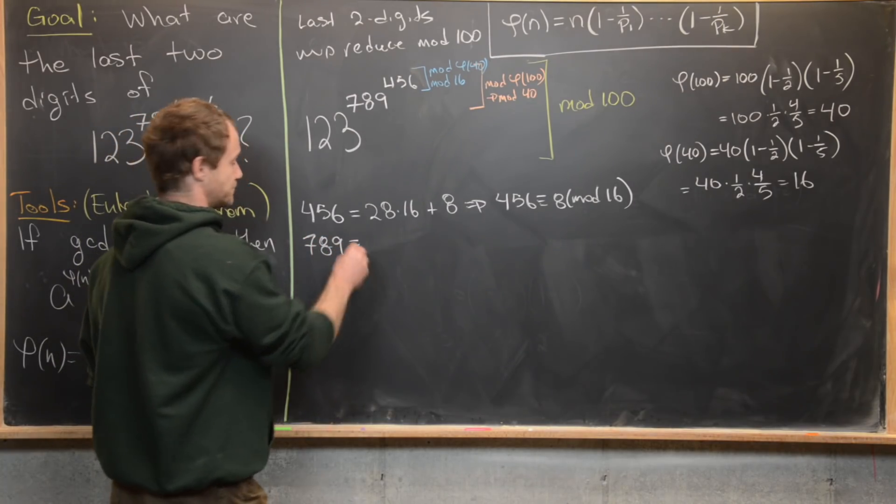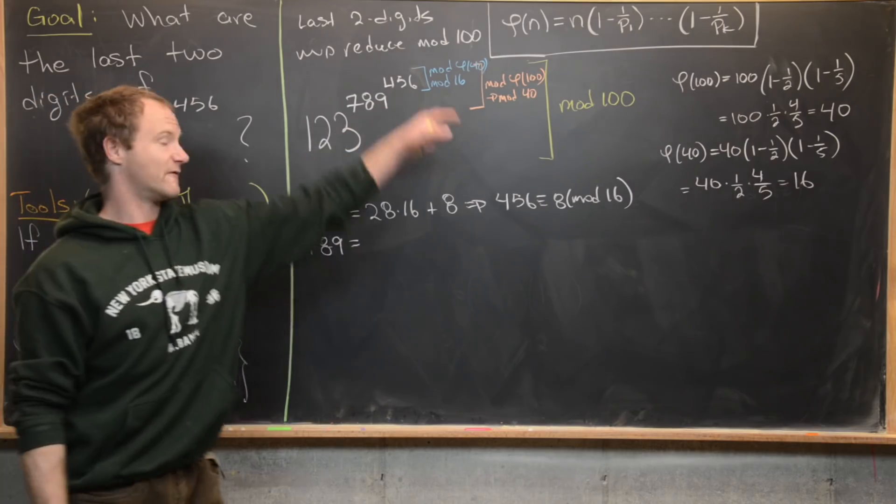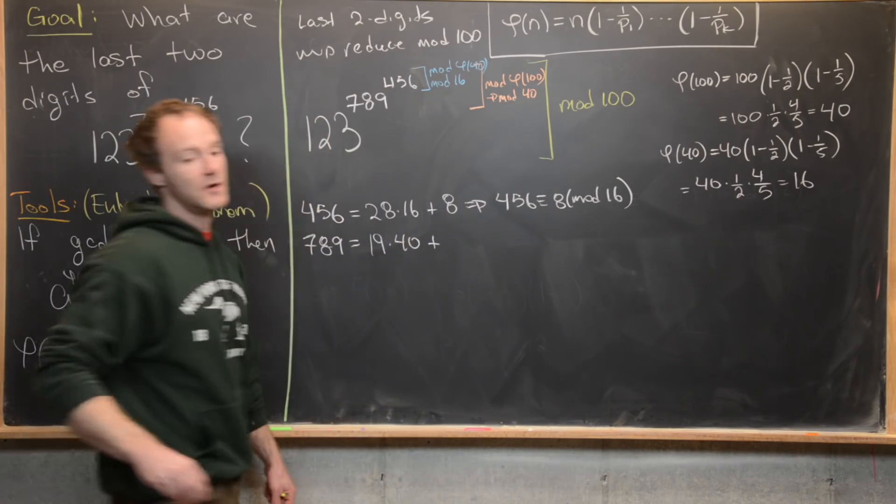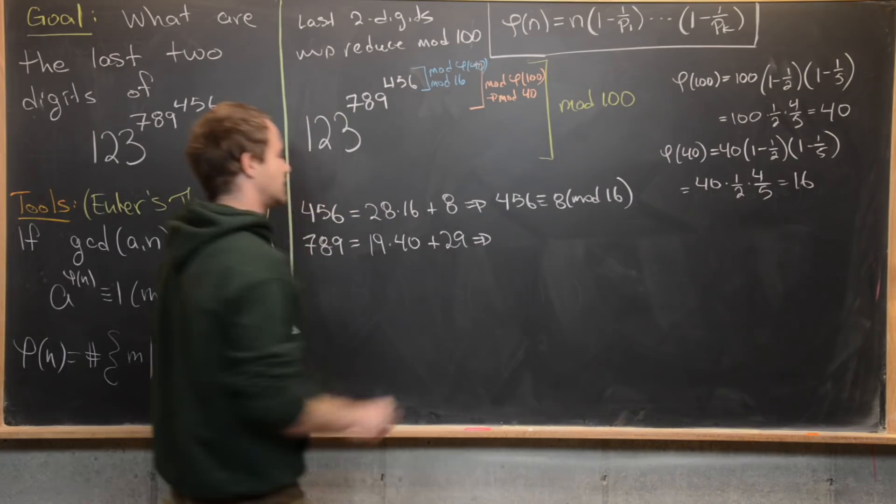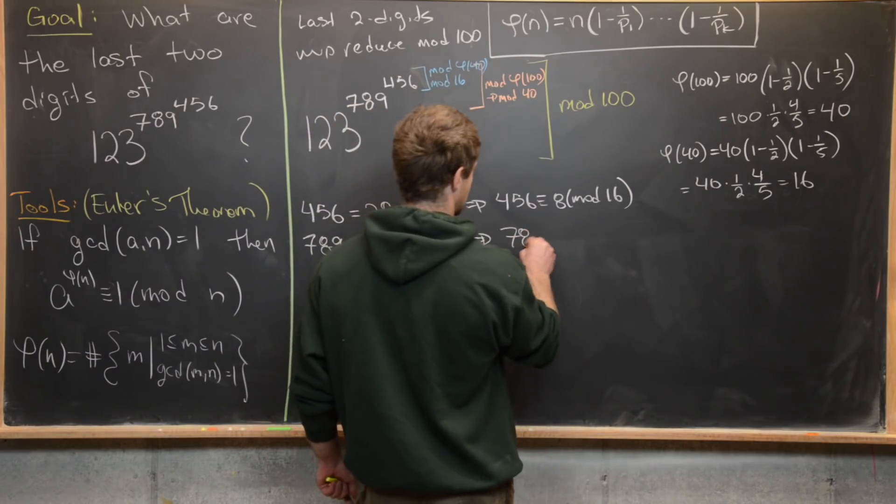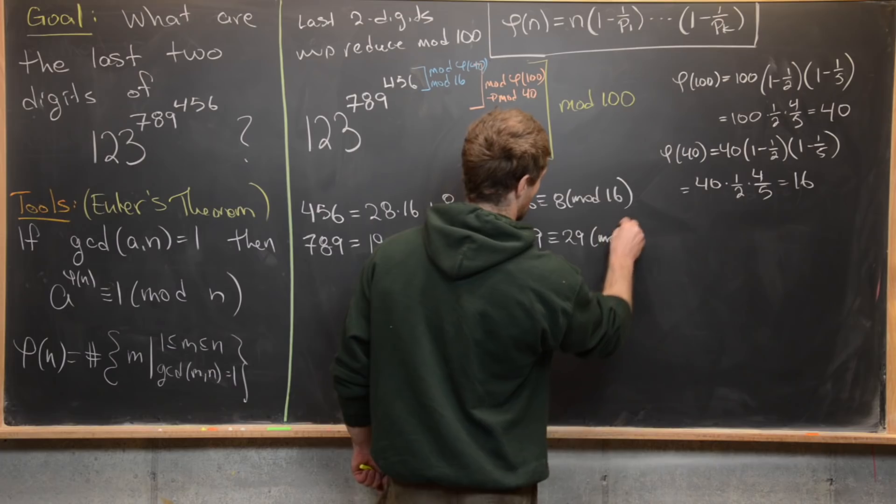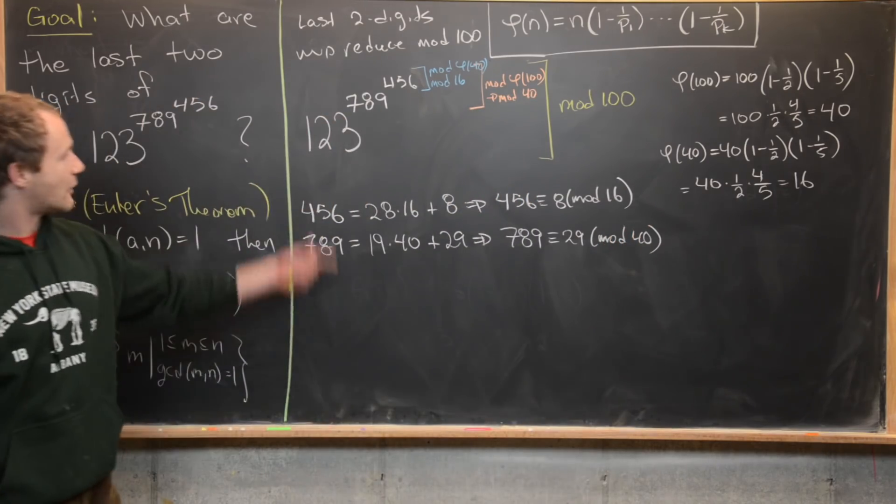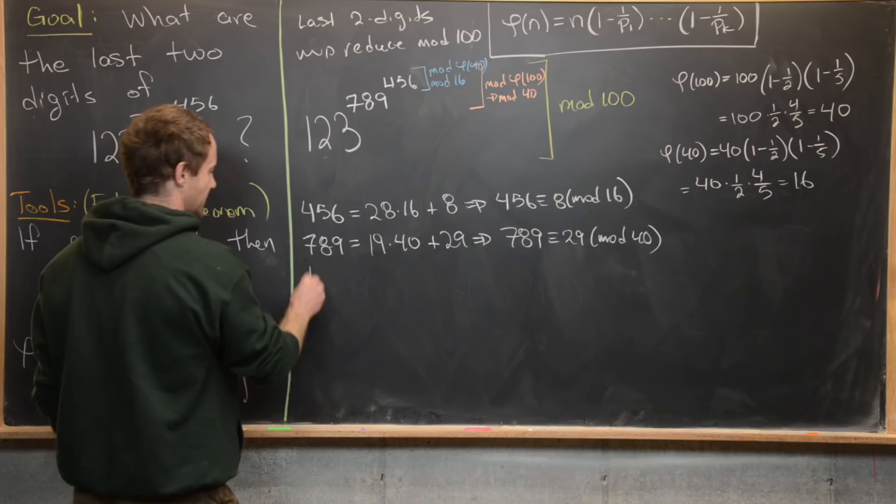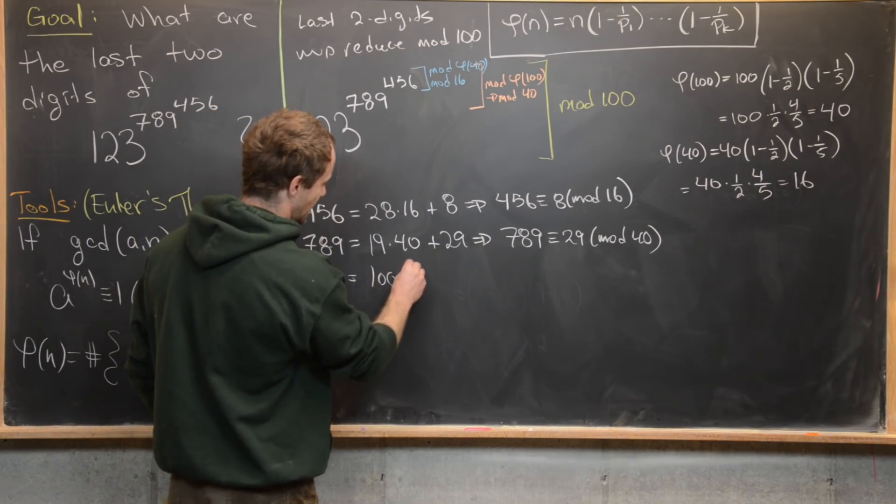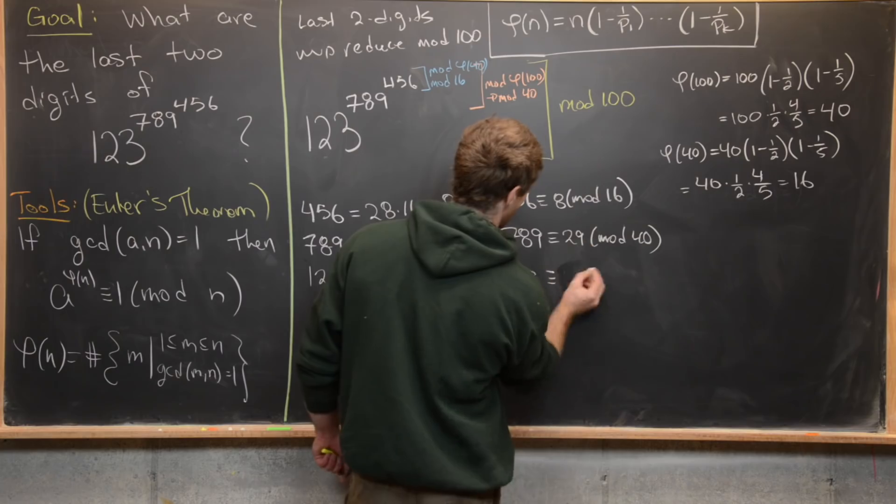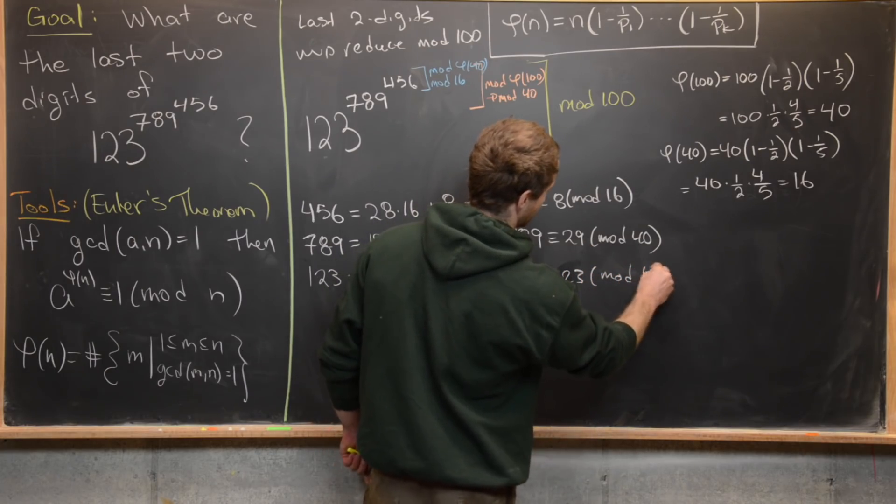Let's look at this 789. And we're going to look at that after dividing by 40 because we're reducing that mod 40. So that's 19 times 40 plus 29. So that means that 789 is congruent to 29 mod 40. Now we've got to look at the base and the base is working mod 100. So that means 123, that's easy to see. That's just 100 times 1 plus 23. But that tells us that 123 is congruent to 23 mod 100.